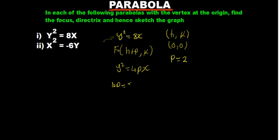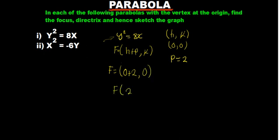Now that p = 2, we substitute into the focus formula. Our h is 0, p is 2, and k is 0. So the coordinates of our focus are (2, 0).